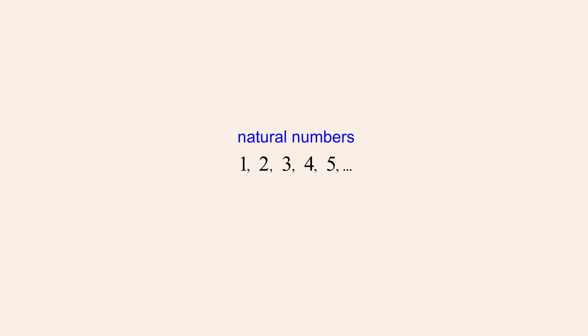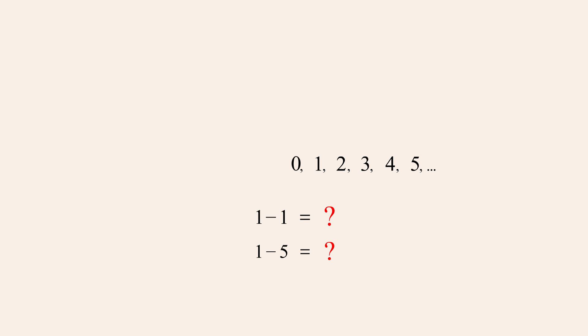Mathematics has a long history of extending our number system to include new types of numbers. For instance, when the only numbers in our number system were the natural numbers — consisting of only positive integers — it was not possible to subtract a larger number from a smaller number, or even to subtract a number from itself. However, eventually the number system was extended to include zero and negative numbers, forming the set of numbers called integers. Any two integers can be added or subtracted and the result can always be represented by another integer. The set of integers is therefore said to be closed under the operations of addition and subtraction.